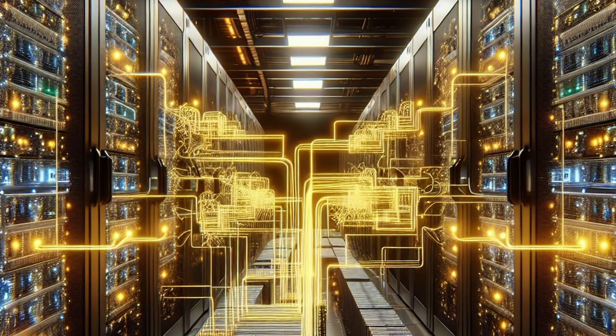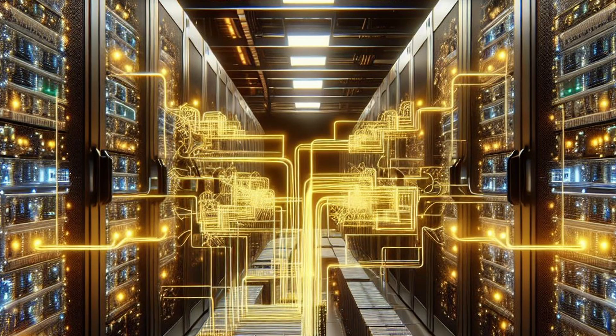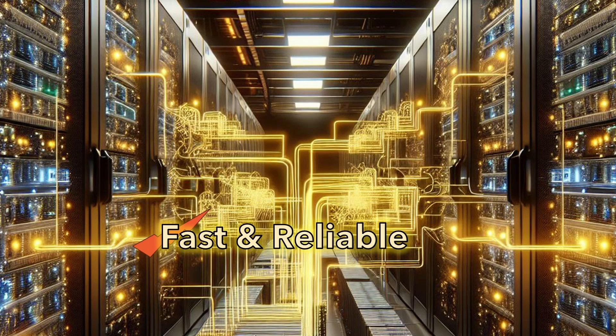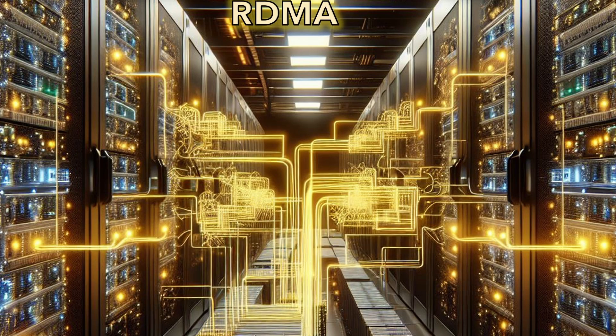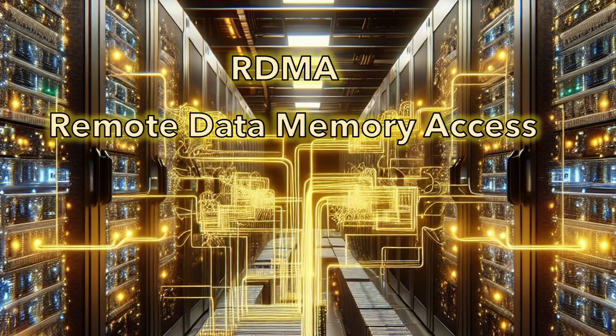Imagine a data center running AI training or inference with hundreds of thousands of GPUs that need to communicate with each other quickly and efficiently — huge amounts of data constantly moving around. To make sure this data moves smoothly, we need a solution that is fast and reliable, and that's where RDMA comes in. Remote Direct Memory Access lets servers access each other's memory directly, bypassing the CPU with high bandwidth and low latency. This session will go into the basics of how RDMA actually works.